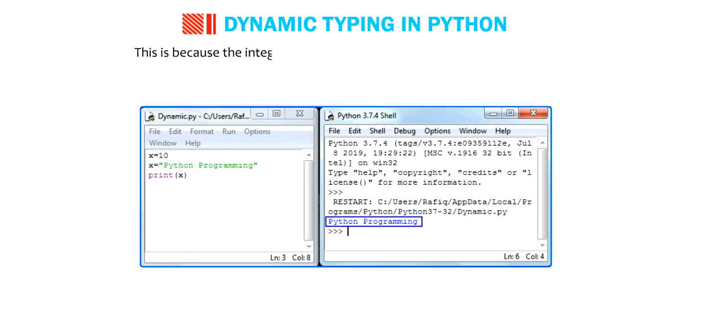This is because the integer value of x gets overwritten by the string value. This process of initialization and re-initialization is called dynamic typing.